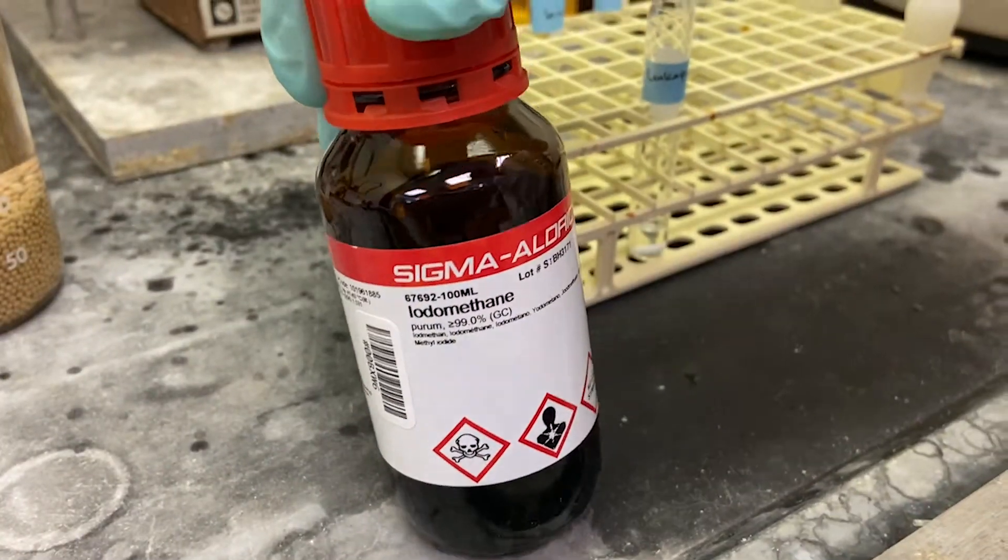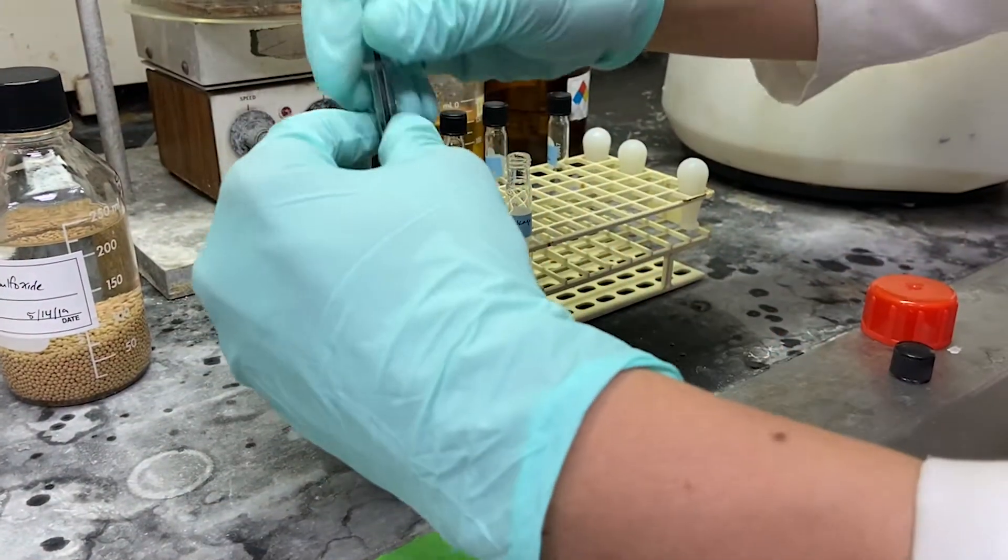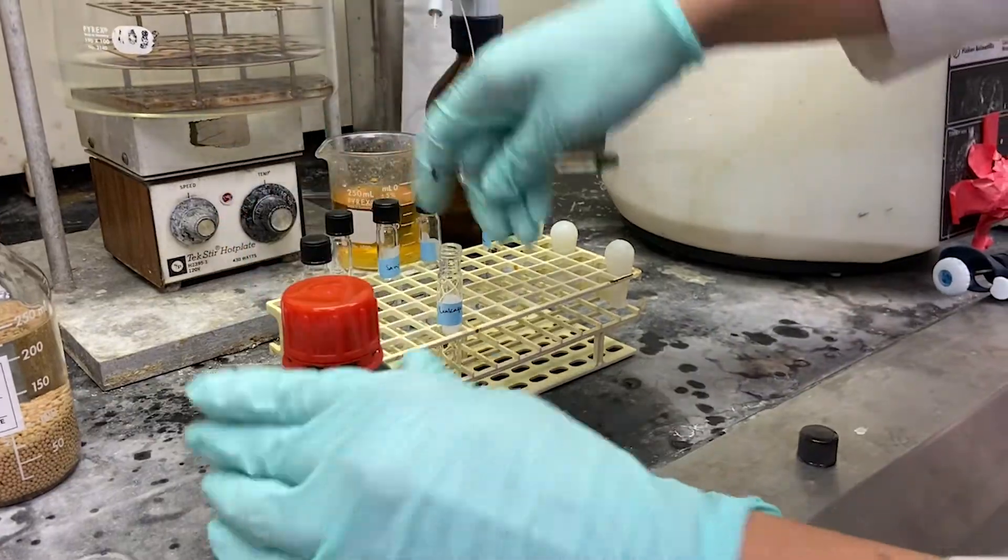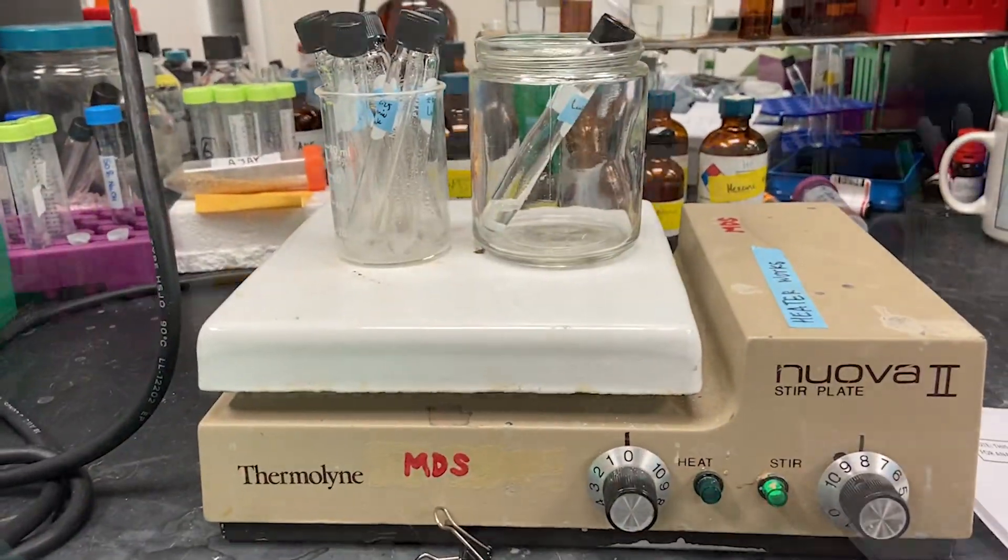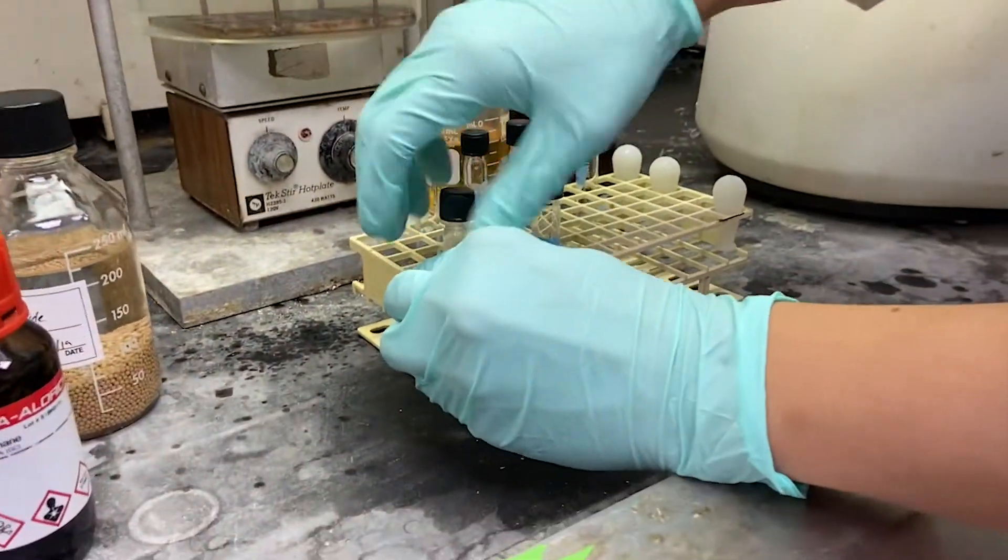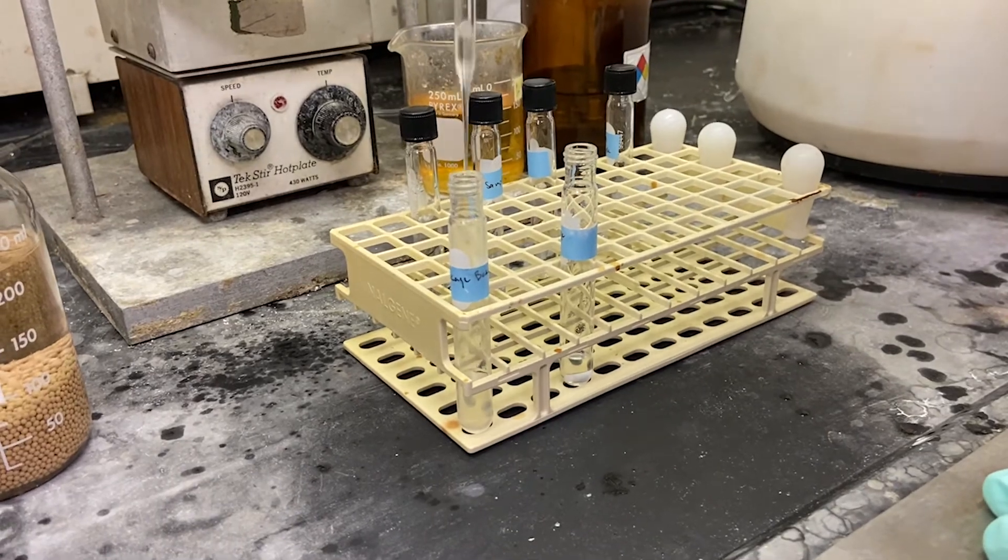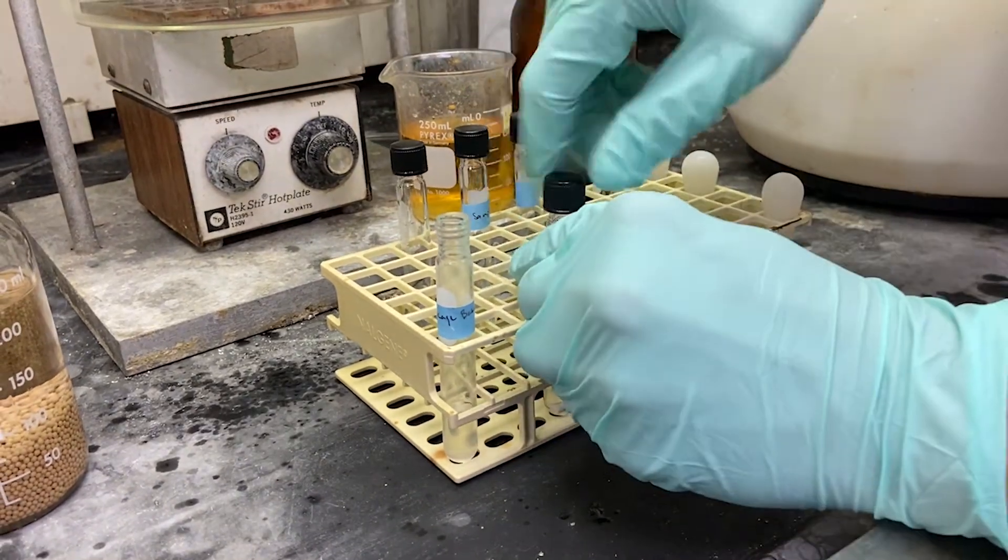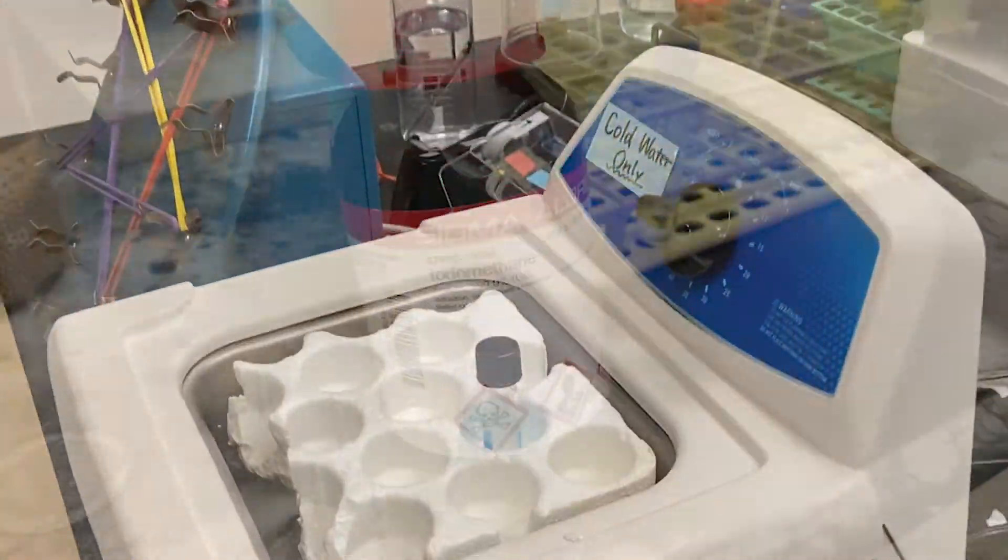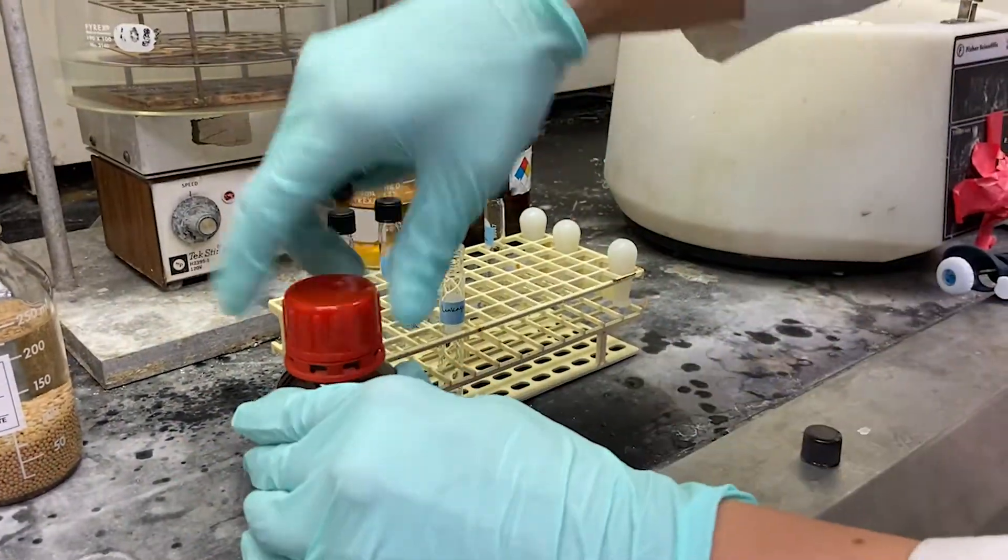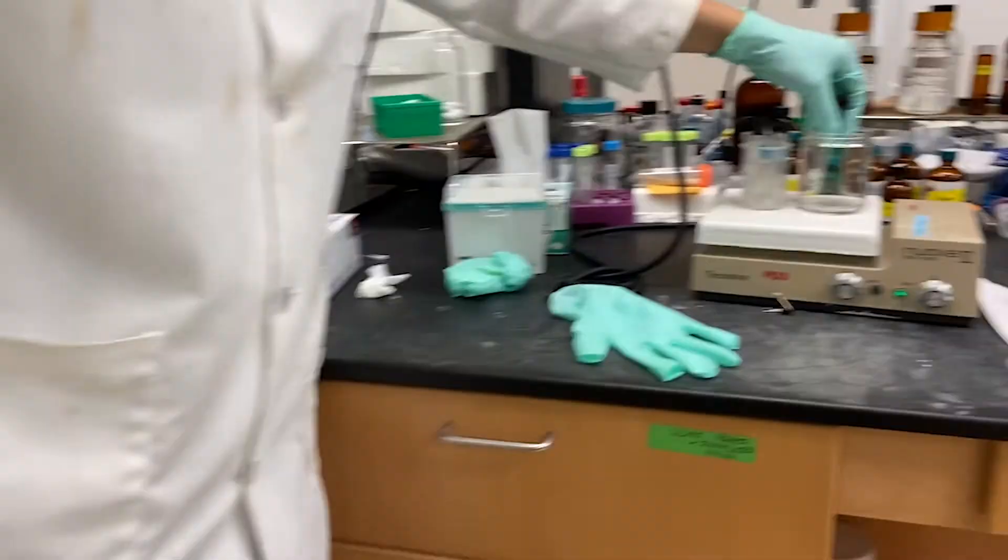After sonicating, we add 100 microliters of iodomethane to the sample and allow the sample to spin magnetically for 40 minutes. This concludes one round of methylation. To try to ensure complete methylation, a second round of base and iodomethane addition is affected. A second methylation is not necessary in some cases such as oligosaccharides. 400 microliters of our base is added again and allowed to sonicate for 30 minutes followed by another 100 microliter addition of iodomethane and a 40 minute spin.